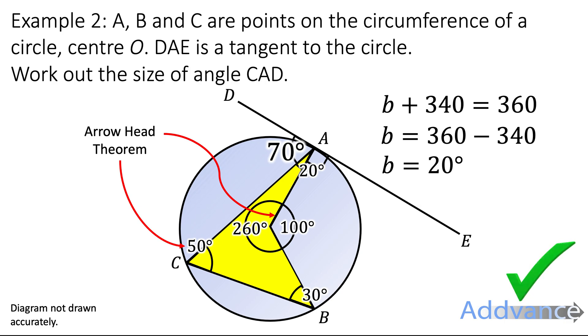So there we use two circle theorems, the arrowhead theorem and also we use the fact that a tangent and a radius make 90 degrees when they're touching. That's a rough idea of how I work out circle theorem exam questions.